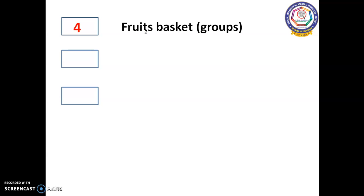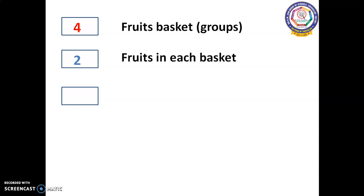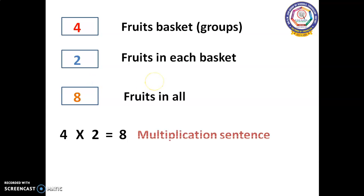Let us see how it is. Can you tell me how many baskets we have? We have four fruit baskets. This four fruit baskets we are considering as groups — four groups. In the four baskets, how many fruits do we have? We have two fruits in each basket. Totally, how many fruits did we get? We got eight fruits in all. Four multiplied by two equals eight. This is called a multiplication sentence.